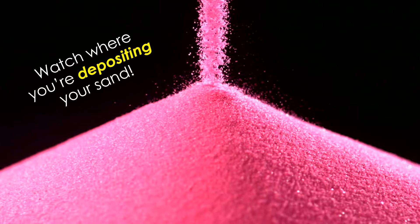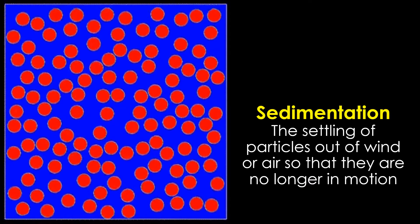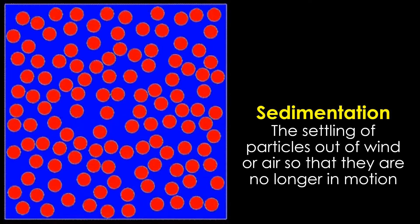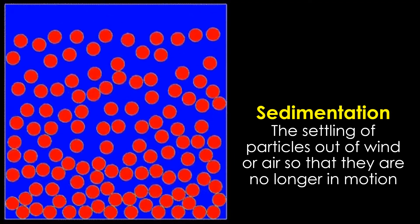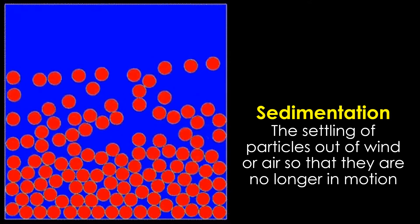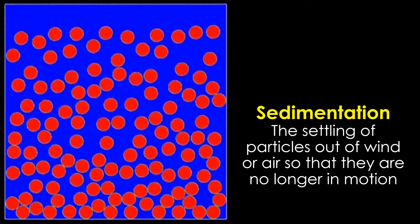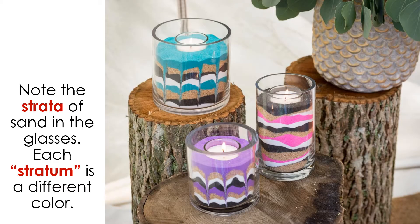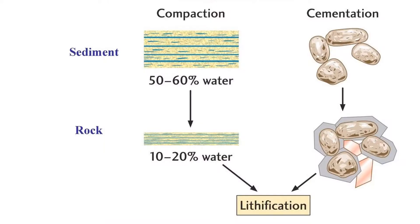At the end of their journey, the sediment will be deposited and spread out. The deposition of sediment is more correctly called sedimentation. It is the settling of particles out of wind or air so that they are no longer in motion. The sediment spreads out into layers, called strata. The sediment may ultimately undergo lithification, becoming compacted and cemented into sedimentary rock.